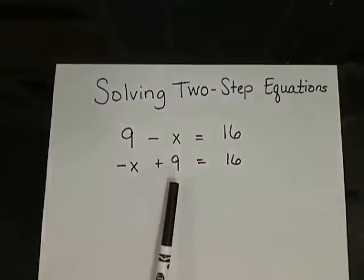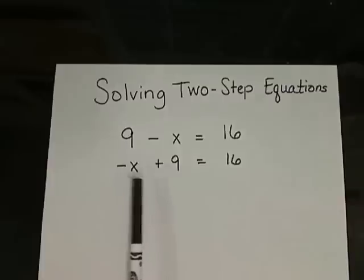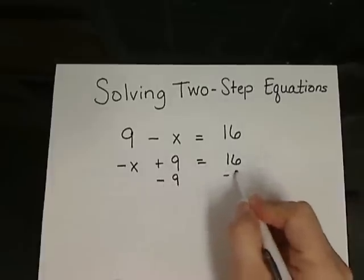First we see that the variable is being added by 9 and also being multiplied by negative 1. We need to undo both of those. So we're going to undo the adding of 9 by subtracting 9 from both sides.